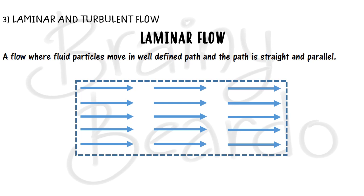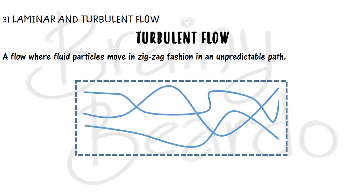Such a flow is called laminar flow. A simple example is a March Past in the army, where soldiers walk in a very disciplined manner — the first layer of soldiers does not cross over the path of the second layer. They go in a very straight, parallel, and disciplined fashion. If all fluid particles flow in such a way, it is called laminar flow.